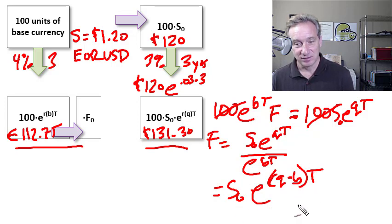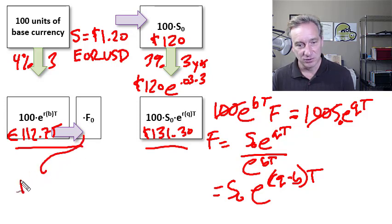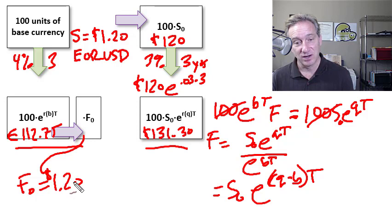And then if I come over here and solve that for the forward, you can see my forward price is going to be equal to my spot price of U.S. dollars. My spot exchange rate of 1.12, right? In the quote currency,